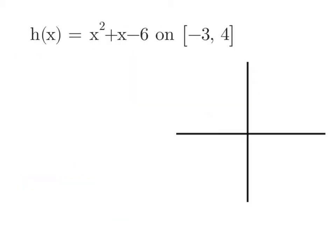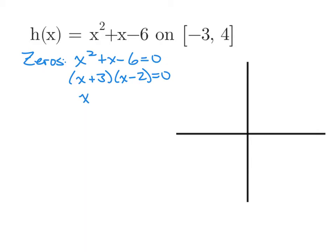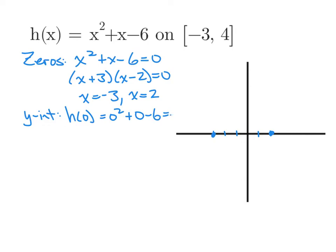What if we graph h of x equals x squared plus x minus 6 on the interval negative 3 to 4? First, find the zeros to identify x-intercepts. Take x squared plus x minus 6, set it equal to 0, and factor it into (x plus 3)(x minus 2). Our zeros are negative 3 and 2, so we have x-intercepts at negative 3 and 2. The y-intercept: h of 0 equals 0 squared plus 0 minus 6, which is negative 6.